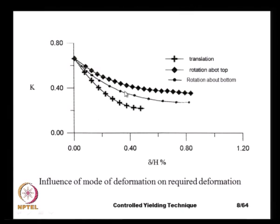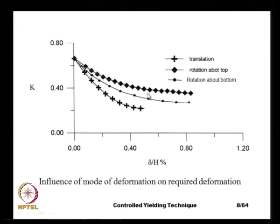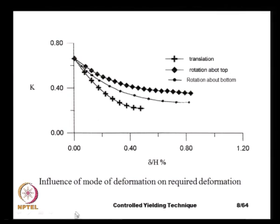The required deformation also depends on the mode of deformation. The translational mode results in quicker reduction of pressures, whereas rotation about the top requires very large deformation, and rotation about the bottom requires somewhat intermediate deformation. So if we want to design a system that will allow the soil to deform and reduce pressures, we need to allow about 0.3 percent of wall height so that earth pressures are reduced.